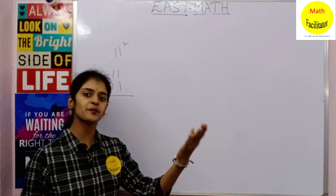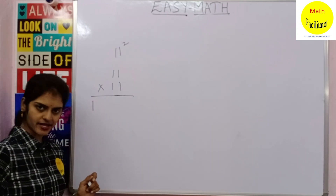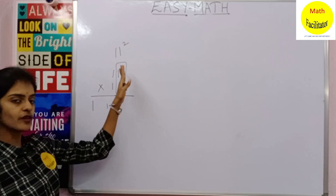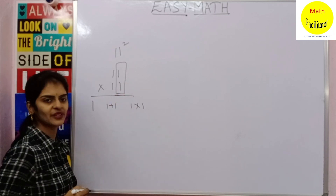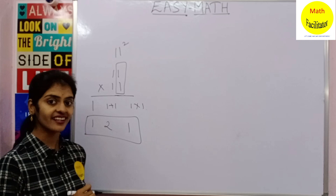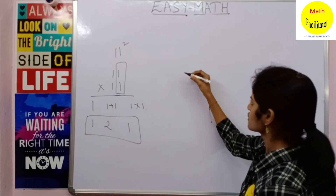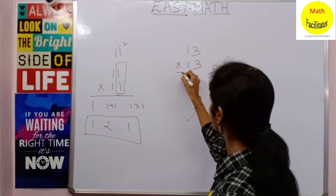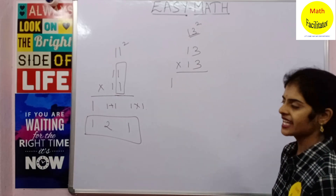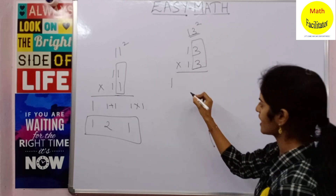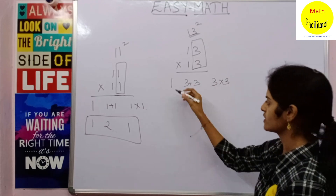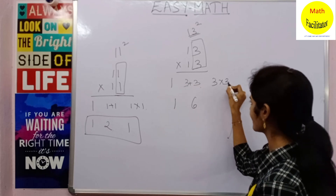The first step is: you will write 1, then add the units digit, then multiply the units digit. For 11²: write 1, then 1 + 1 = 2, then 1 × 1 = 1, giving 121. Now let us use this for a bigger number — 13². You write 1 first, then add the units digit: 3 + 3 = 6, then multiply: 3 × 3 = 9. So the answer is 169.